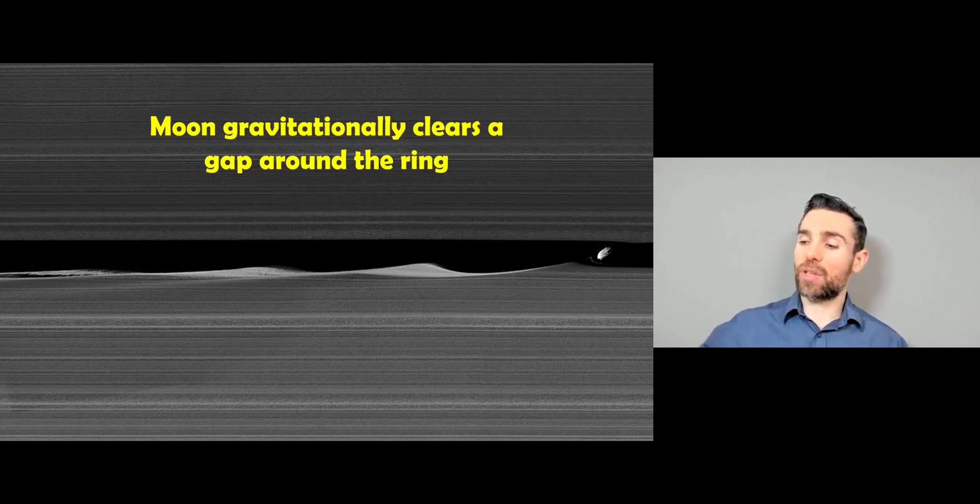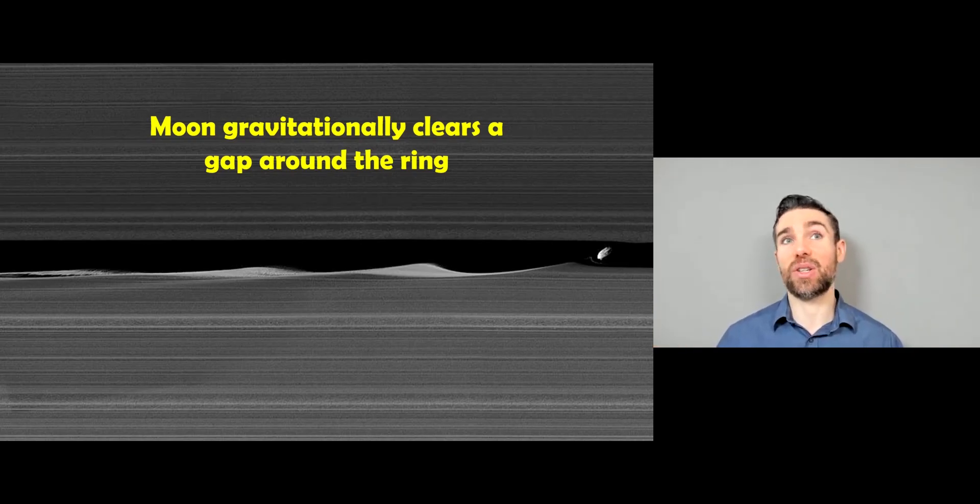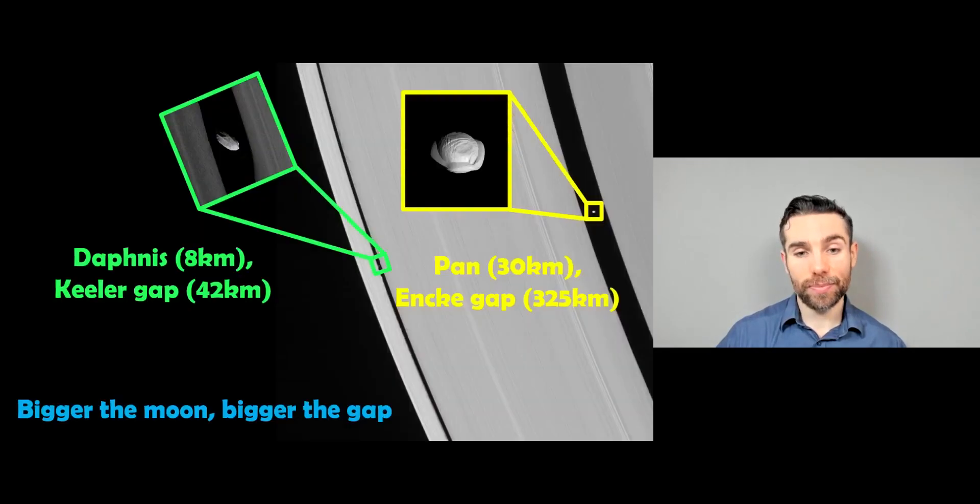So what happens is you've got this moon inside the ring and it has some mass, which means it's exerting a gravitational force on the ring. And it essentially scatters or clears out a gap all the way round the ring. And the bigger it is, the more gravitational force it exerts on the ring. And it's going to have more of an impact. So it gravitationally clears out a gap, any material nearby. It will change the orbit of that ring material so that it's no longer in the same orbital direction as the moon itself.